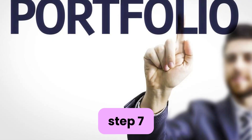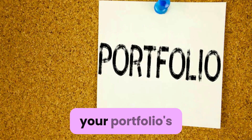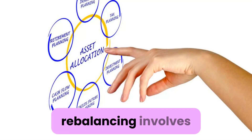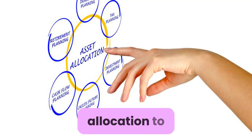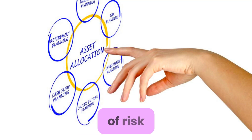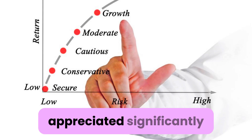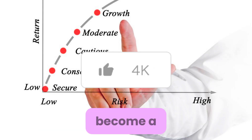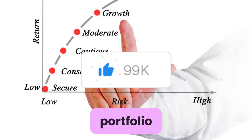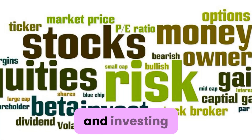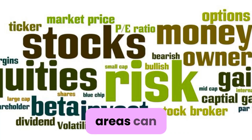Step 7: Monitor and Rebalance Your Portfolio. Regularly monitor your portfolio's performance and rebalance it as needed. Rebalancing involves adjusting your asset allocation to maintain your desired level of risk. If certain assets have appreciated significantly, they may become a larger portion of your portfolio, increasing risk. Selling some of those assets and investing in underperforming areas can maintain a balanced risk profile.